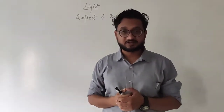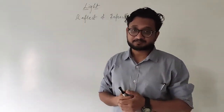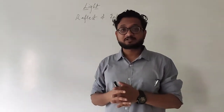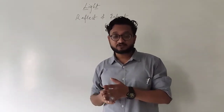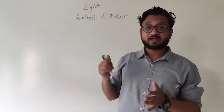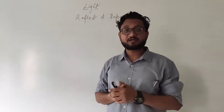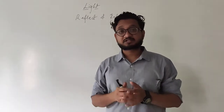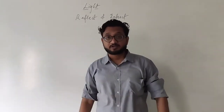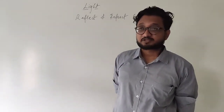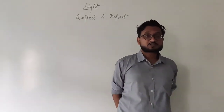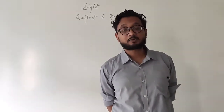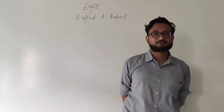We will be doing a lot more numericals. This particular chapter is divided into two parts — light, and human eye and colorful world, which is also part of light. It is a continuation. We will focus on the reflection part first, including images formed because of reflection.